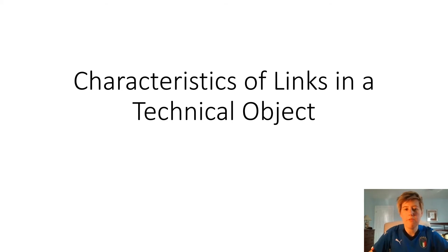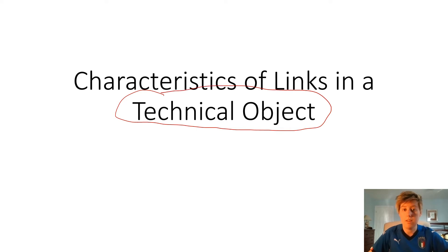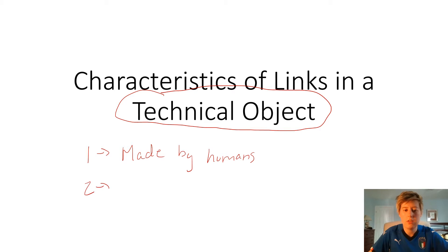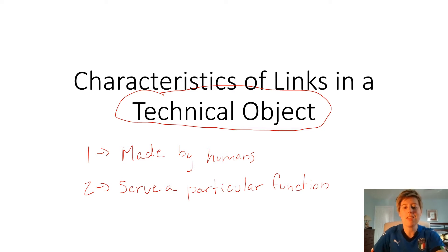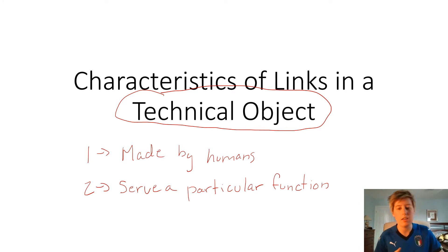In today's video we're going to be focusing on the characteristics of links in technical objects. The first thing we need to understand is the concept of a technical object. A technical object has two criteria: one, it has to be man-made, and two, it has to serve a purpose. Anything that takes raw materials and transforms them into an object is by definition a technical object. My coffee mug is a technical object because it is made by humans to serve a particular function.